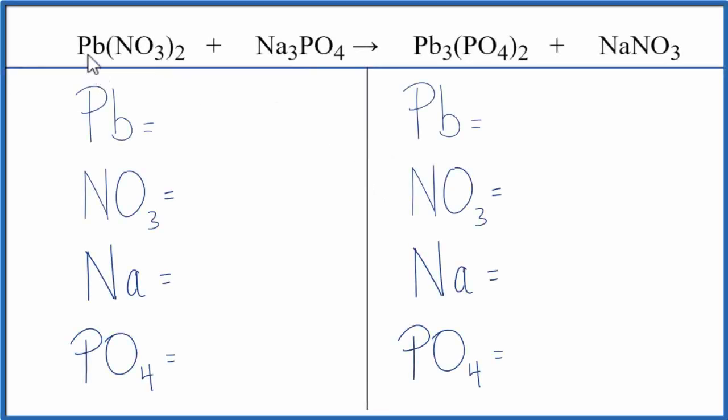In this video we'll balance the equation Pb(NO₃)₂ plus Na₃PO₄. That's lead to nitrate plus sodium phosphate.